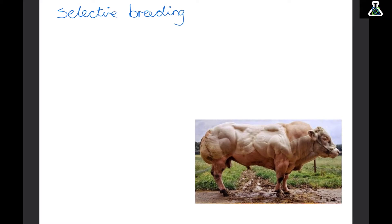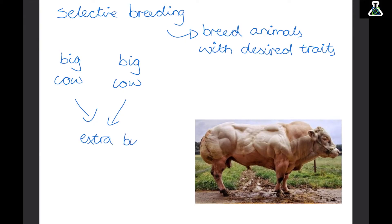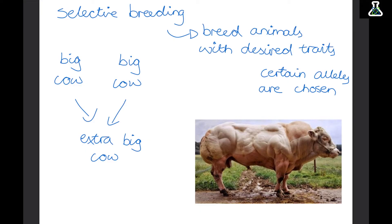Selective breeding is when we breed two parents with characteristics that we want, so that the offspring has those characteristics. For example, if we want a really large, strong cow, we breed a big cow with another big cow to get an even bigger cow. Over successive generations we can end up with a cow specially adapted for what we want — providing lots of meat. However, a problem with selective breeding is that it reduces the gene pool. Lots of the animals become closely related, so we could end up breeding brothers and sisters together, which can cause many health problems.